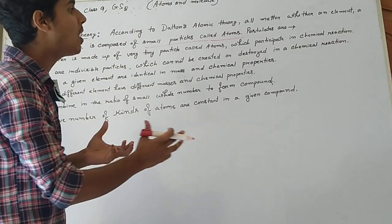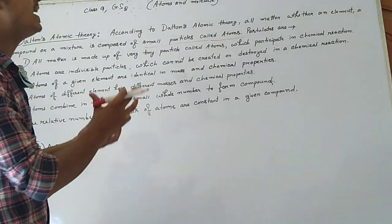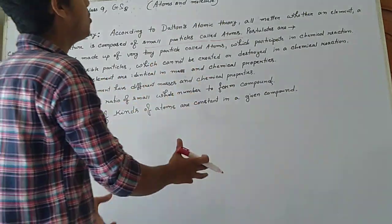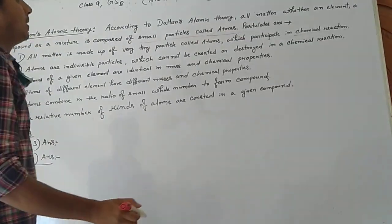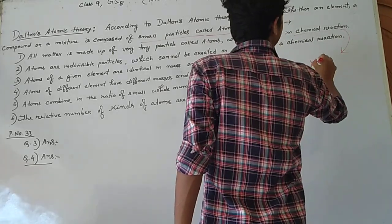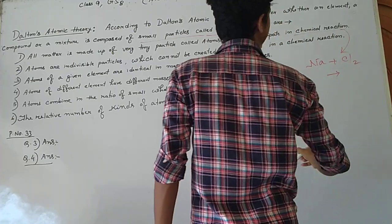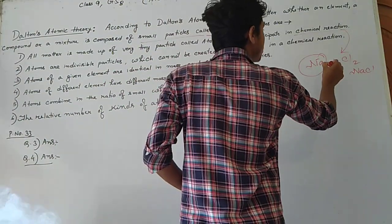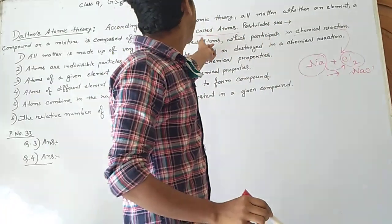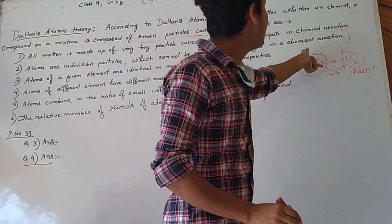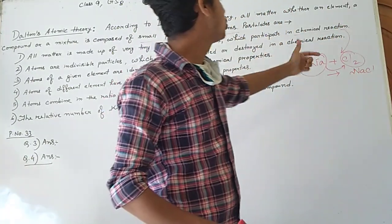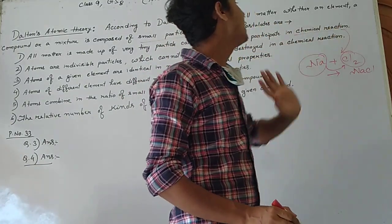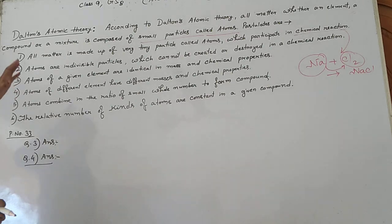In a chemical reaction, not only the compound or element participates — the atoms inside every element and compound also participate. For example, when sodium reacts with chlorine to form sodium chloride, the atoms of sodium react with the atoms of chlorine. Atoms also participate in chemical reactions.